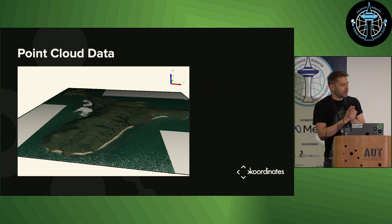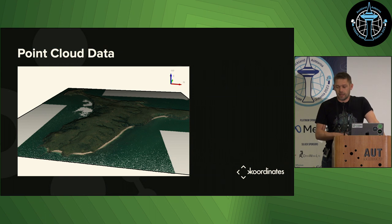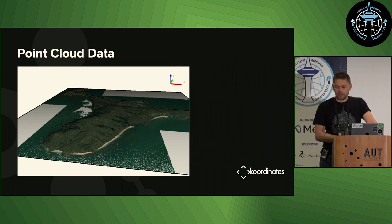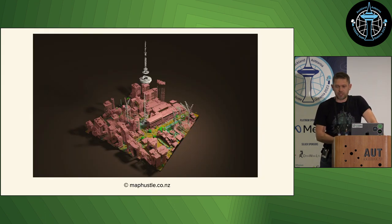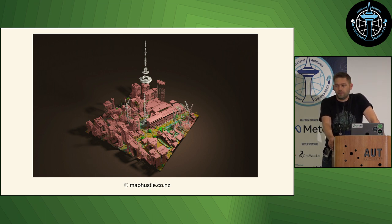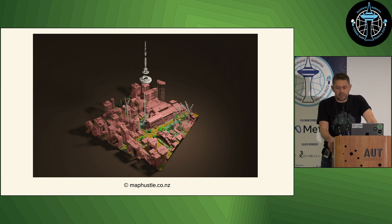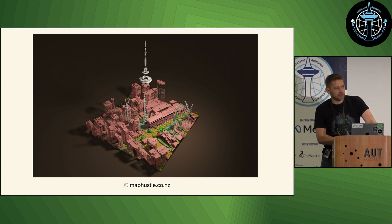Hopefully you know what point cloud data is — it's sort of what it says: a whole bunch of points in an area. This is an example of Motuihe Island out in the harbour — quite a small dataset, colorized with aerial imagery. A much prettier example, with permission from Emery, comes from a talk about creating very nice maps out of point cloud data with QGIS and Blender. That's an example of a point cloud dataset of downtown Auckland. You can get this data at koordinates.com.